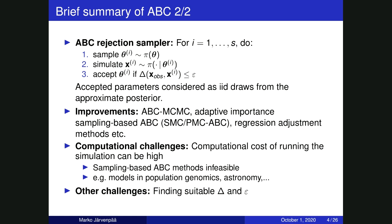In addition to this computational challenge, there are also other challenges — for example, finding suitable discrepancy or suitable summary statistics to form the discrepancy can often be difficult. Similarly, choosing a good value for the threshold parameter epsilon can also be difficult. But in this talk, I'm mainly concerned with the computational challenges.